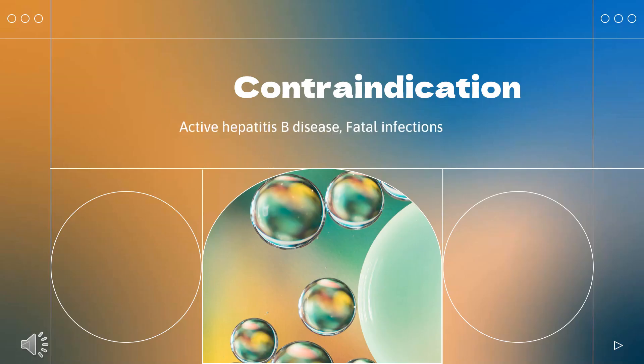Who cannot use ofatumumab? Kesimpta is contraindicated in patients with active hepatitis B disease. Fatal infections caused by HBV in patients who have not been previously infected have occurred in patients being treated with ofatumumab for CLL, at higher intravenous doses than the recommended dose in MS, but for a shorter duration of treatment.